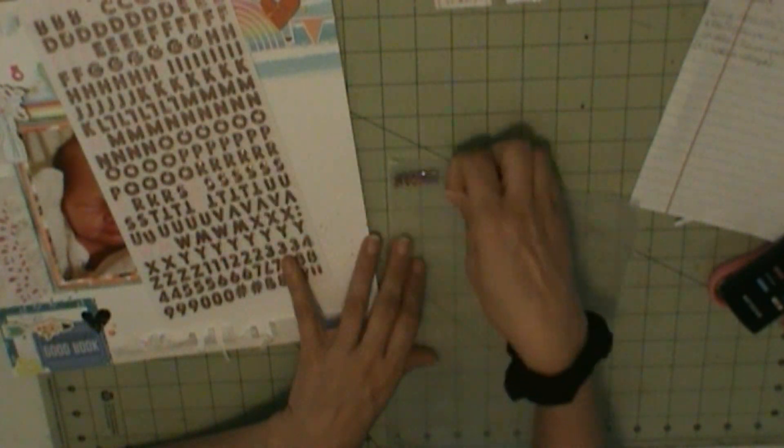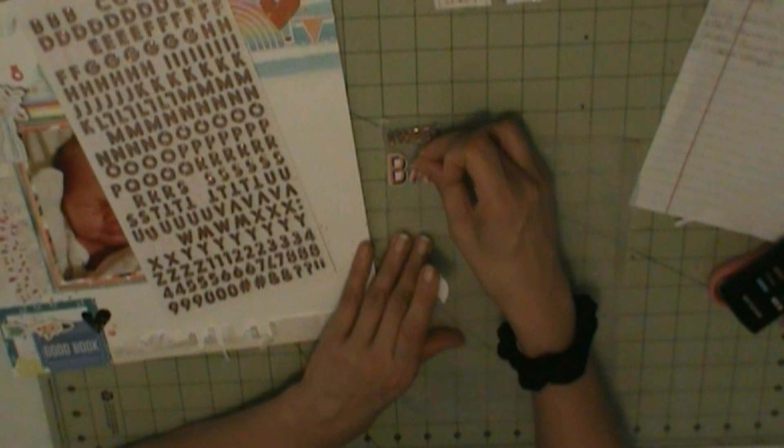So I'm going to title this Sweet Baby of Mine. So Sweet in the words are the American Crafts Happy Life Thickers. And Baby is American Crafts Charming Thickers. And then Mine is Hip Kit Club Exclusive Alphabet Thickers.